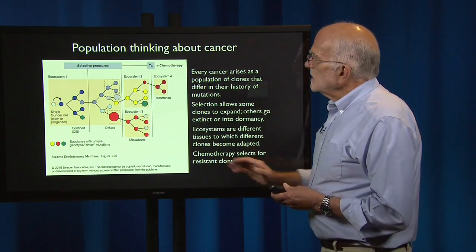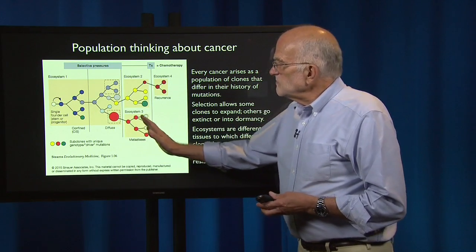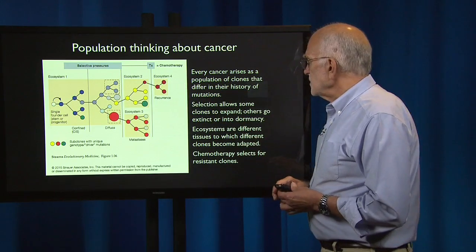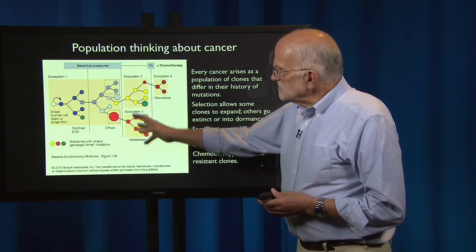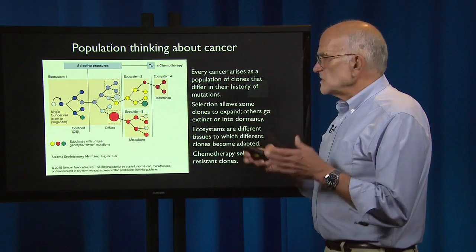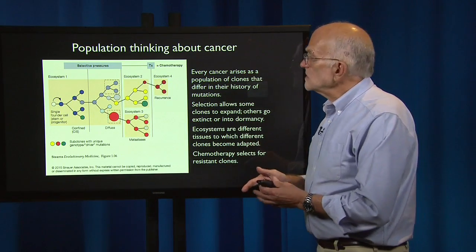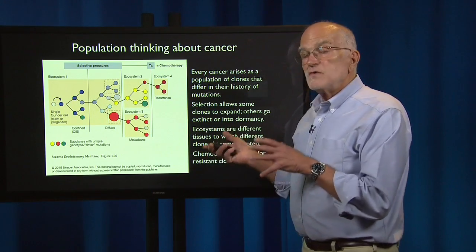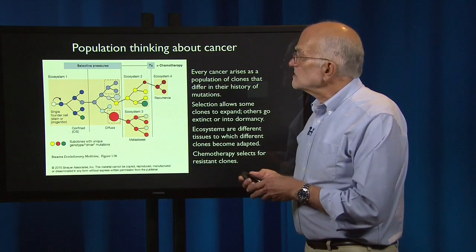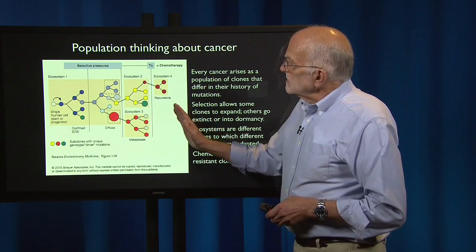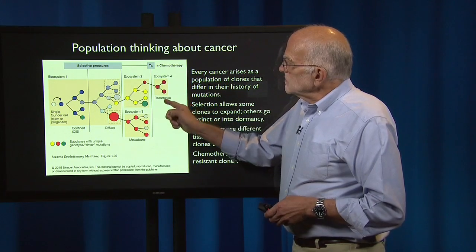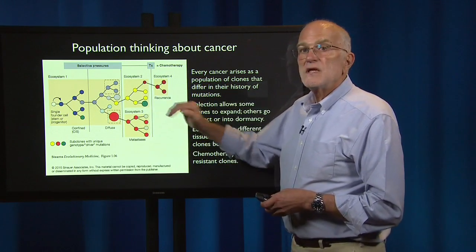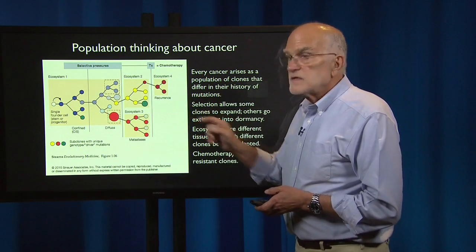We think about a cancer as a genetically heterogeneous population of clones that differ in their history of mutations. Selection allows some clones to expand and some eventually to escape chemotherapy. The ecosystems they occupy are different tissues to which clones can become locally adapted. This micro-evolutionary view of cancer shows that one reason for recurrence after chemotherapy is the genetic heterogeneity of the clones on which therapy is operating.